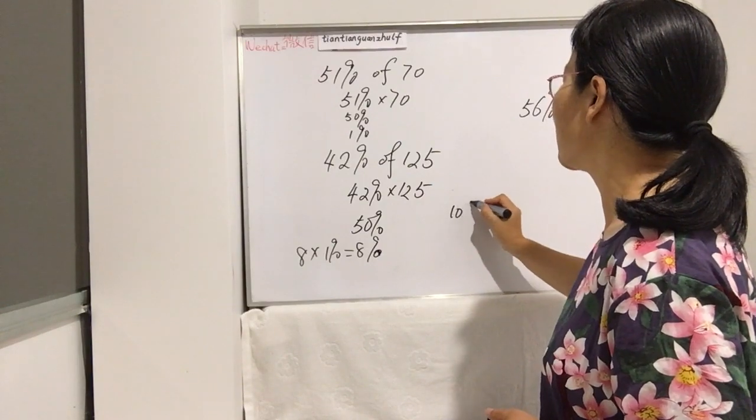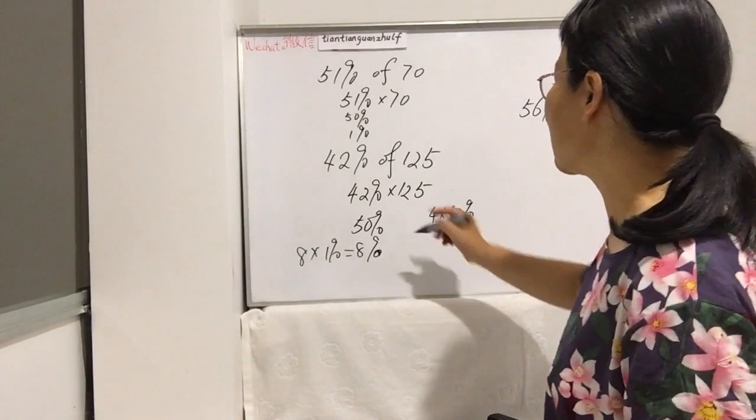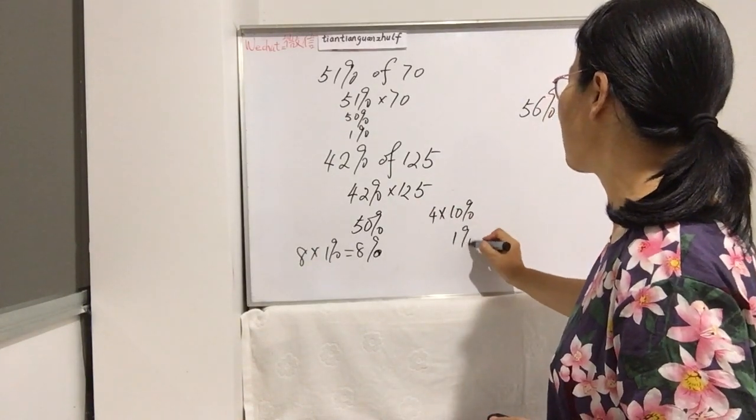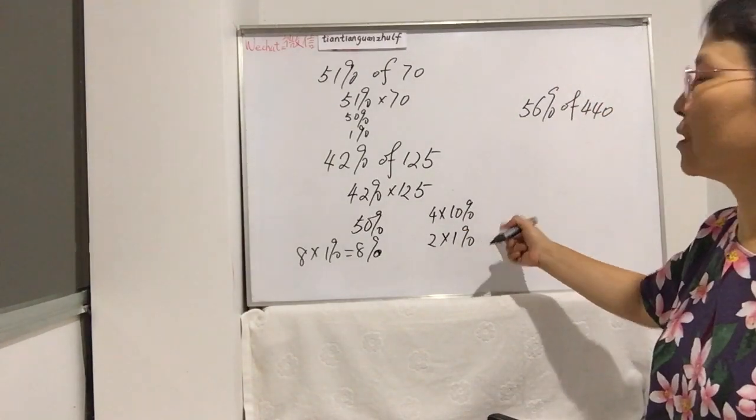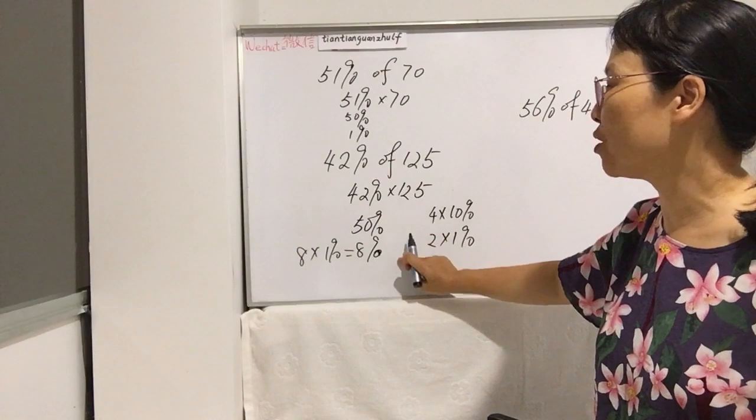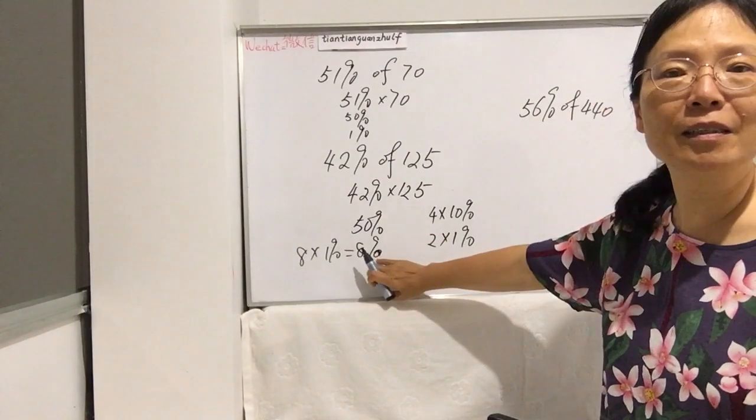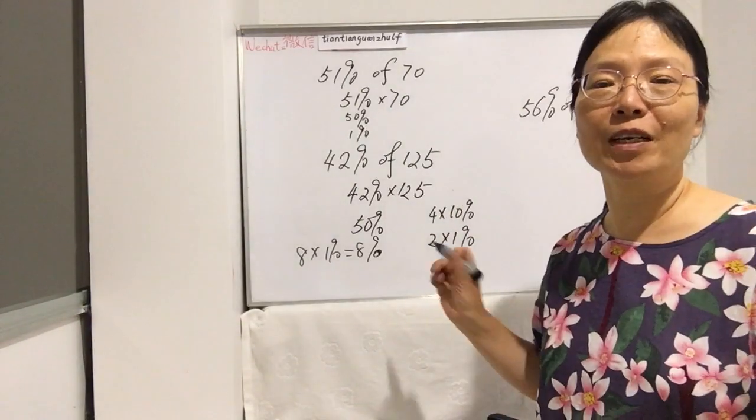Four times 10% is 40%, plus 2%, which is 1% times 2. So you can work this way. This is another way to work these 42%. So 42% you have two ways of thinking.